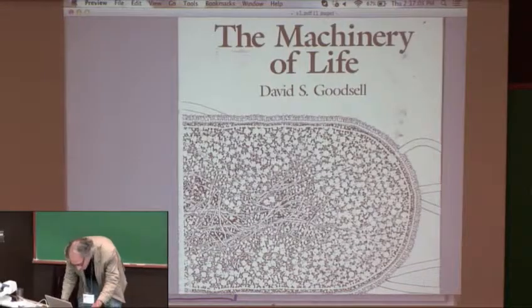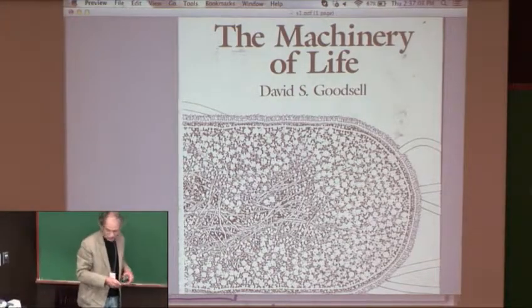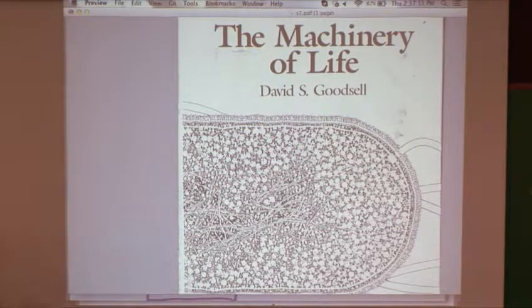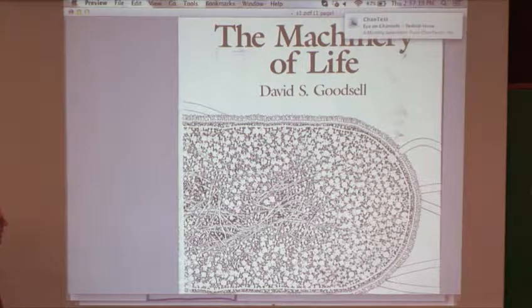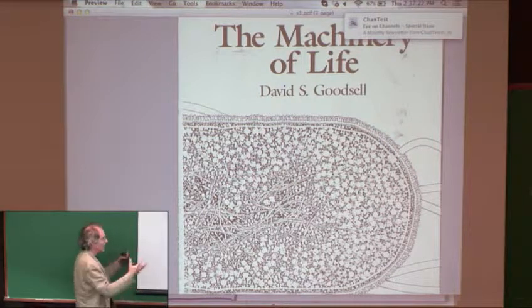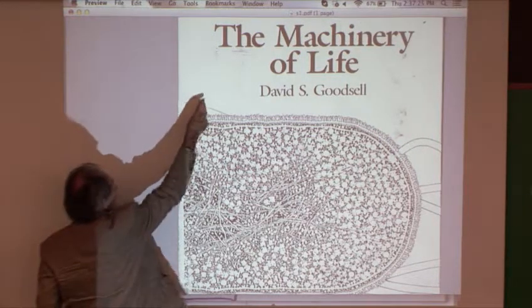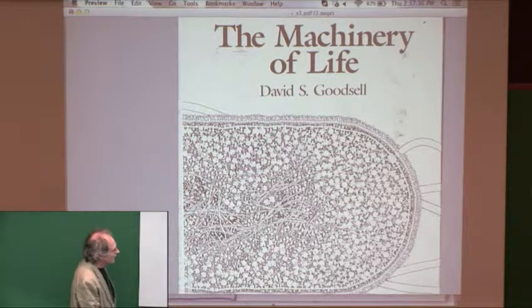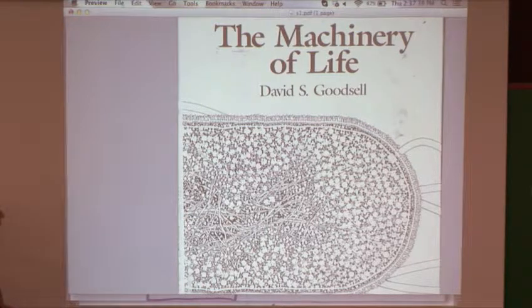The reason this might have biological relevance is that this is an illustration by Goodsell of what the interior of an E. coli looks like. The interior of most everything is jam-packed with stuff, and shapes and the interaction of shapes is a fundamental, dominant feature of cellular mechanisms.